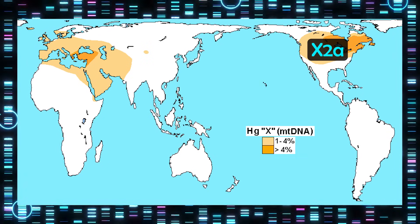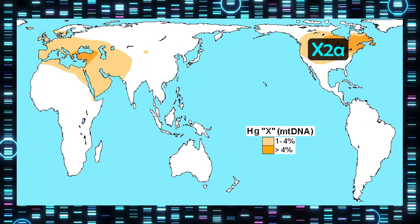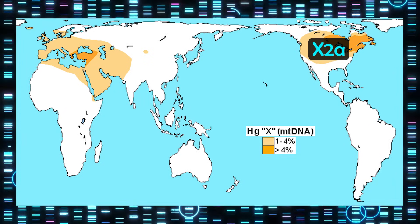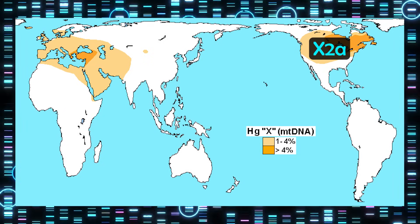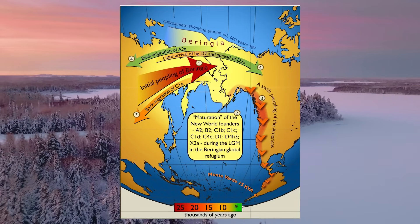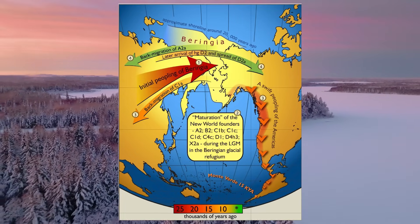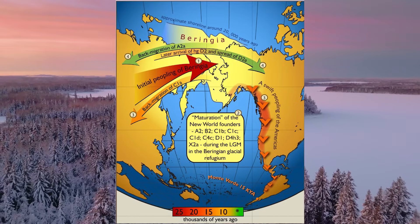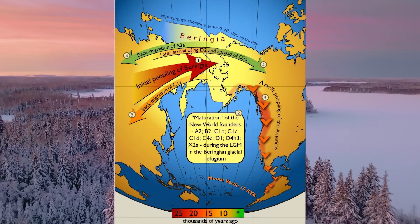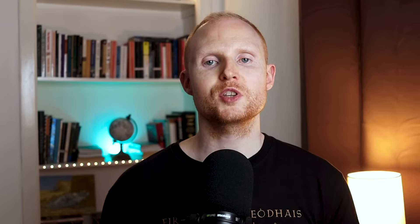Other branches of X are found in Europe and Asia in general, but X2a is unique to North America. One theory is that it formed in ancient Beringia, the region between Siberia and Alaska that was once thought to be twice the size of Texas, among the ancestors of indigenous populations. So as we have seen, Canada reflects a genetic melting pot of various different ancestries, from indigenous to European to global ancestries.